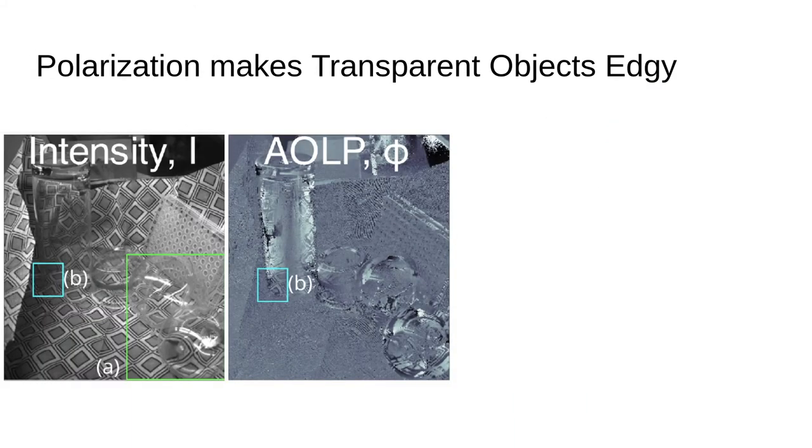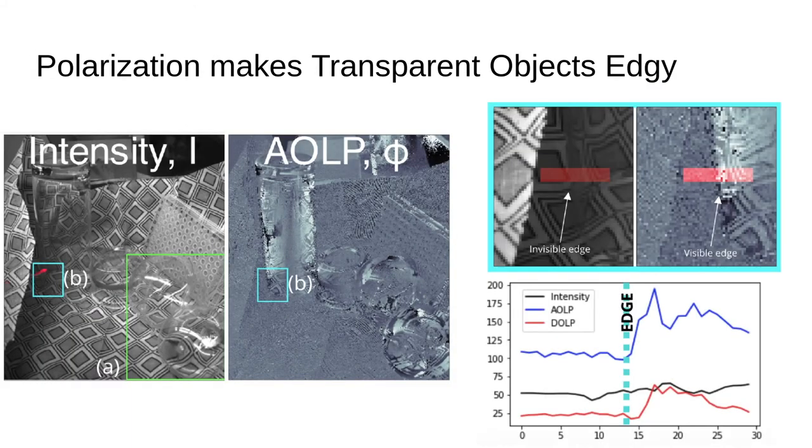Let's take a look at some edges now. Here we show an example of a glass where the edge practically disappears in the intensity image. However in the angle of linear polarization the edge is clearly visible. This allows for better segmentation and we verify this edge in the graph below. So I guess you could say polarization makes transparent objects a little bit edgy.